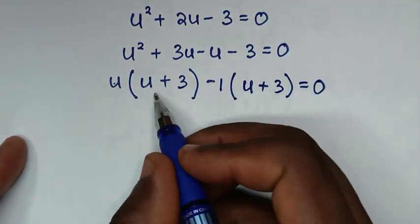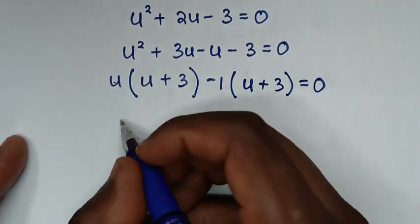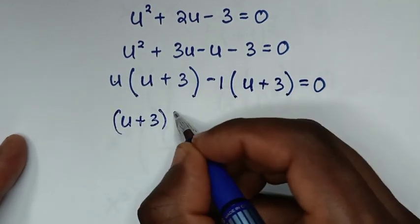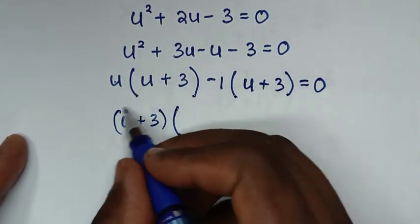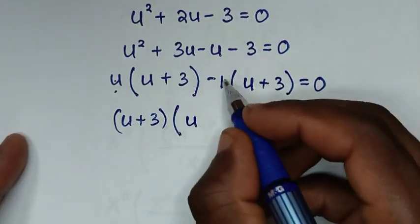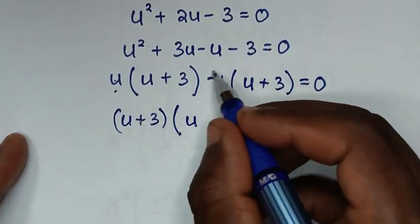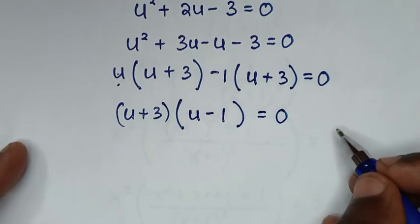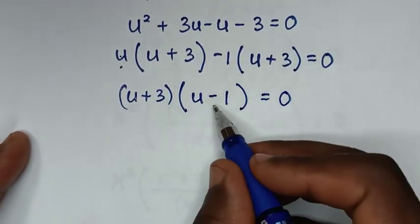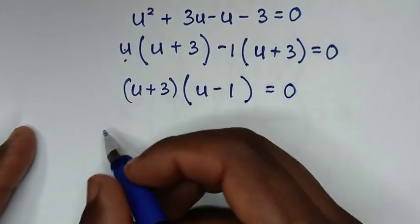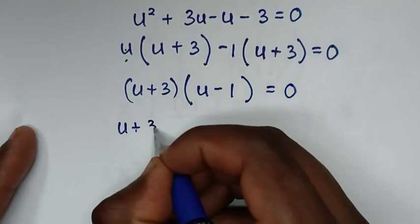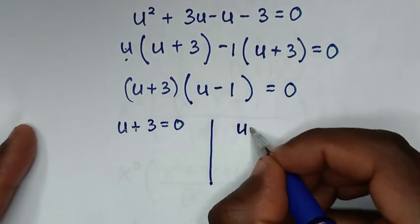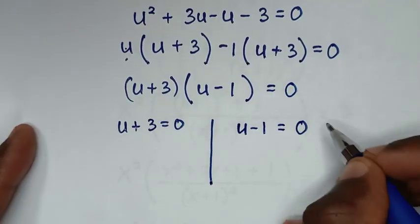Then from here, (u+3) is common, so we take (u+3) out of the bracket: (u+3)(u−1) = 0. Then from here we have two solutions: u+3 = 0 is the first solution, and u−1 = 0 is the other solution.